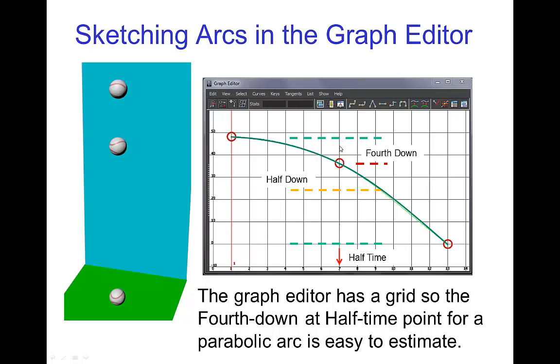Now we want at this frame, we want the ball to be a fourth of the way down. Again, using the grid it's pretty easy to see that this is halfway down. And then between the apex and halfway down is a fourth of the way down. So this is where we put that key frame. And with that, we already basically have a nice parabolic arc.